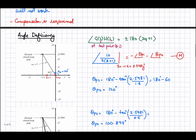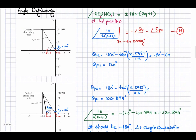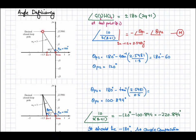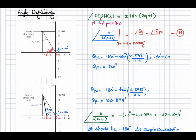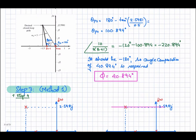Now let's calculate the angle deficiency. The open-loop poles are at s = 0 and s = −1. For the pole at the origin, considering the triangle formed with the desired pole, the angle contribution is 180° − 60° = 120°. This 120° is the angle contribution from the pole at the origin to the desired closed-loop pole.